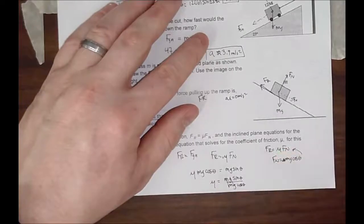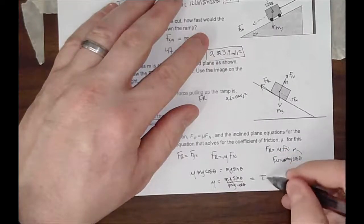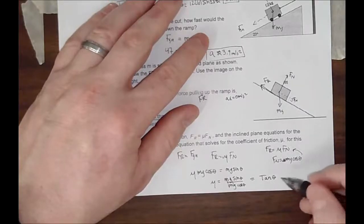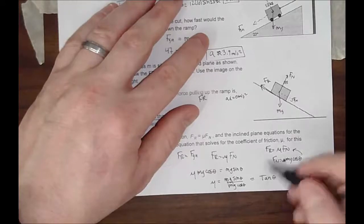What's interesting here is the mg's cancel out, and sine theta divided by cosine theta actually gives us tangent of theta. So in order to solve for mu, you just have to know the angle and the tangent of that object. So tan theta. That's pretty cool.